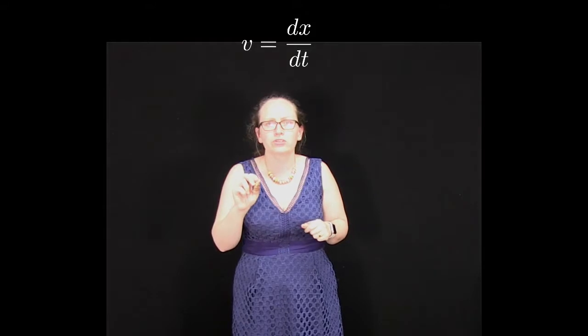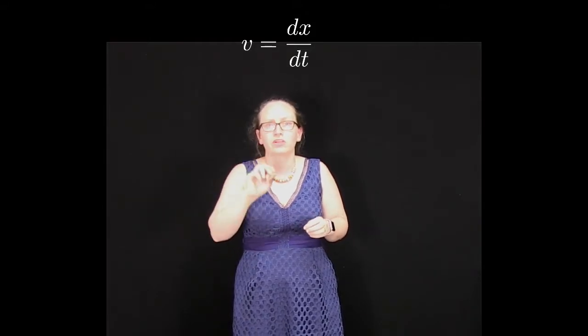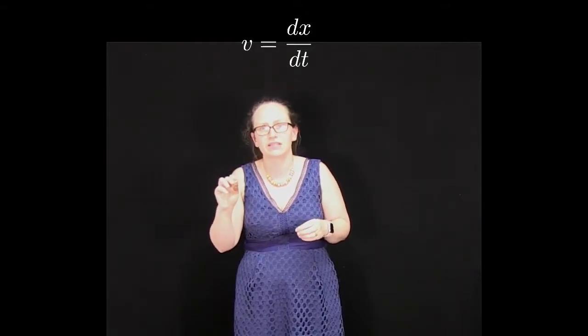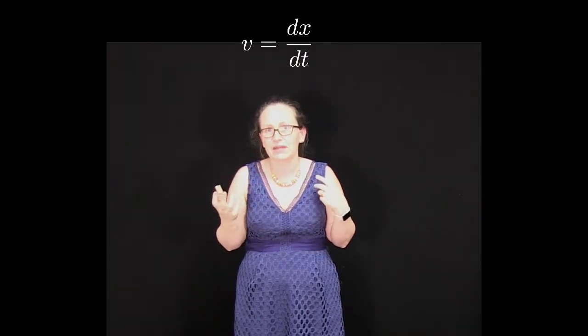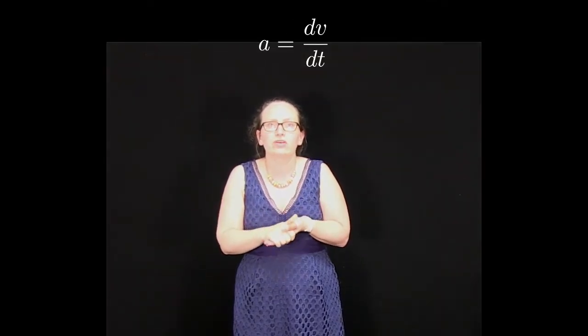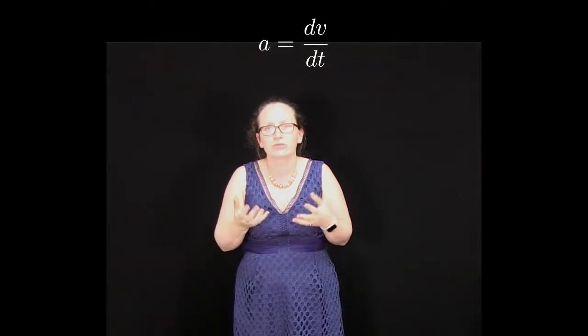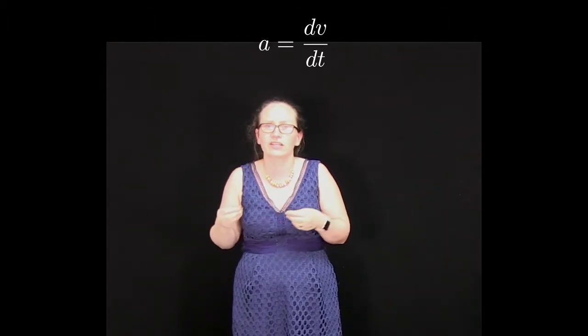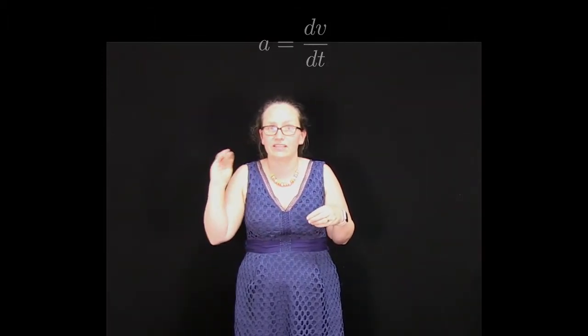I'm also going to assume that you know that the velocity is the rate of change of the displacement. So if we want to write this mathematically, we can write v equals dx dt, and I'll assume that you know that the acceleration is equal to the rate of change of the velocity. So we can write that as a equals dv dt.